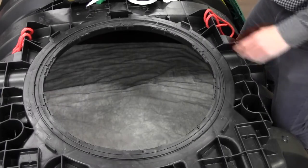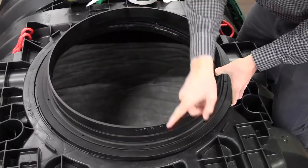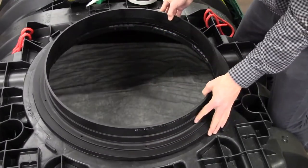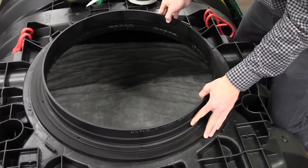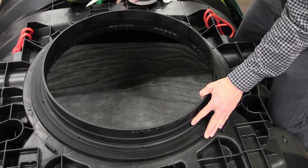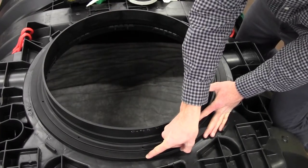The first step is to locate the alignment arrows on the pipe adapter ring. There are two arrows, one on opposite ends of the ring. Once you've found these arrows, place the pipe adapter ring on the tank opening, aligning one arrow with the arrow on the inside edge of the tank, and the other arrow aligned with either the inlet or outlet side of the tank.